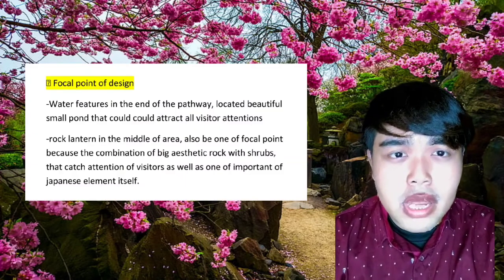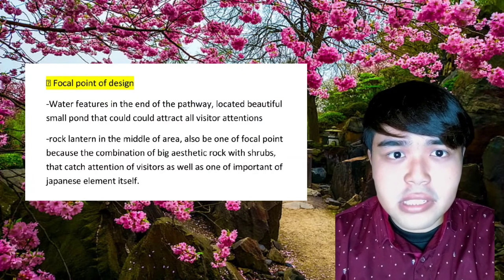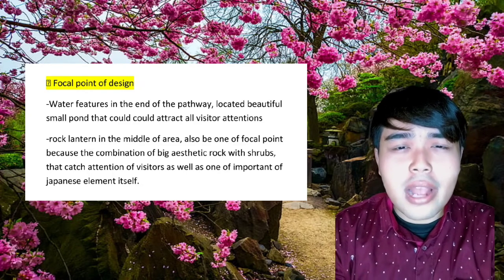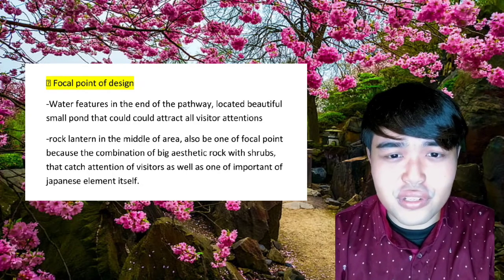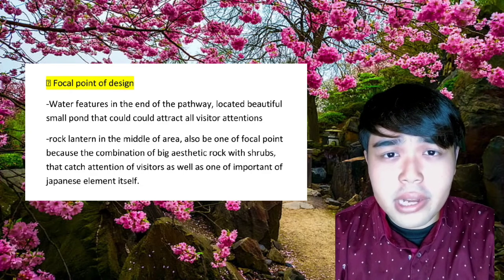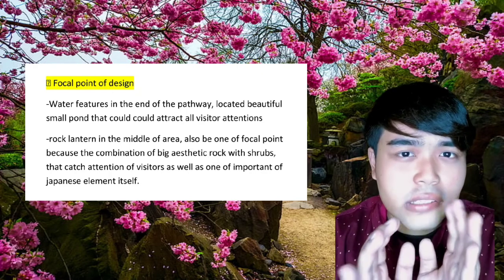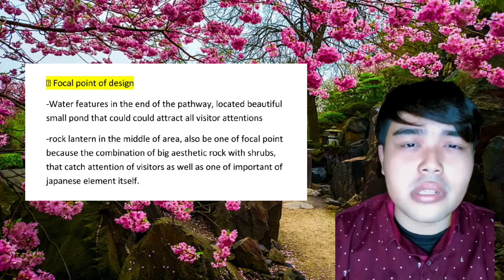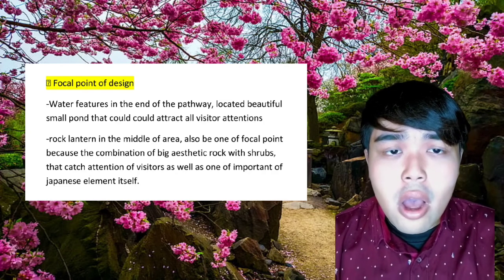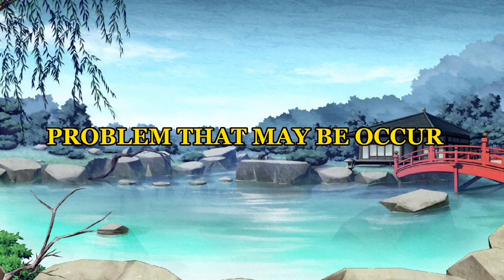There are two focal points on my master plan. The first is the water feature at the end of the pathway — a beautiful small point that attracts visitors' attention. The second is a rock lantern in the middle of the area, which also serves as a focal point through the combination of a large aesthetic rock with shrubs that catch visitors' attention, representing an important Japanese garden element.